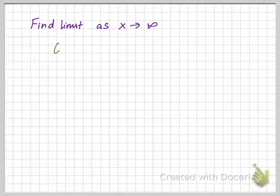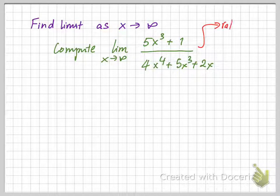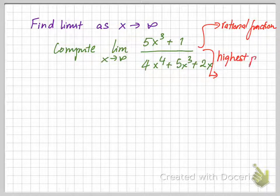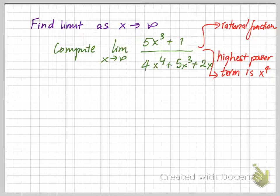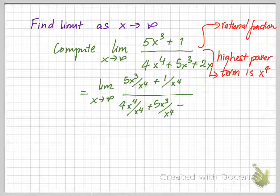The last example asks you to find the limit of a function as x goes to infinity. Again, it's a rational function, but in this case the highest power term is x to the 4th. As a rule, we divide everything by x to the 4th and simplify to get a simpler function. This is the resulting simplified function.